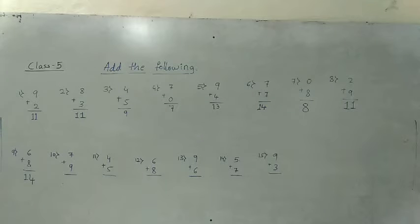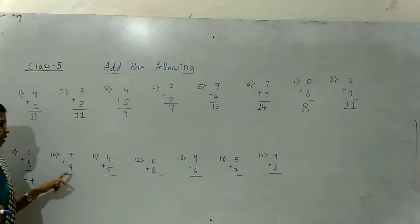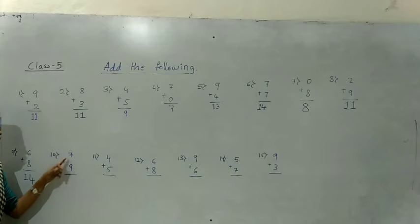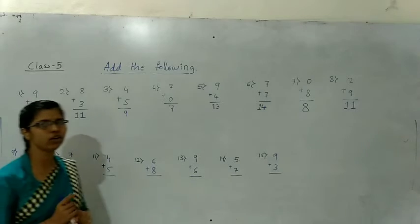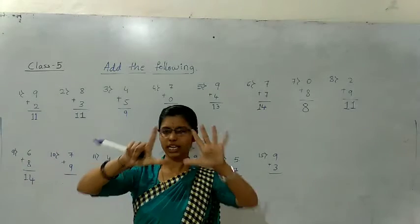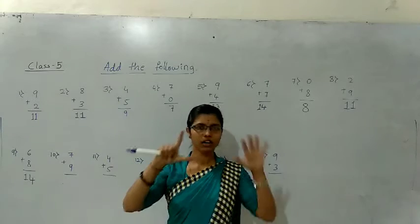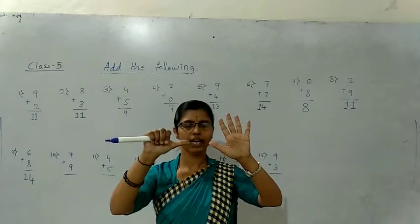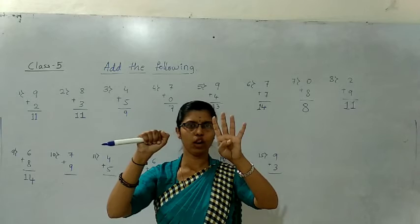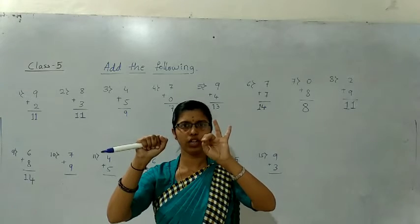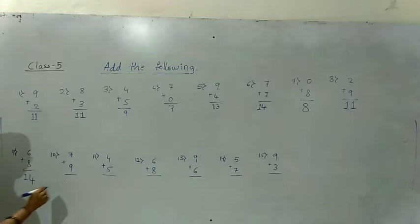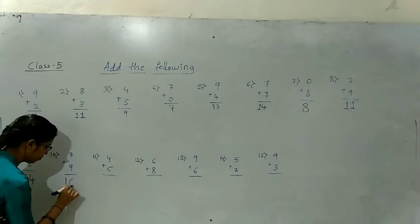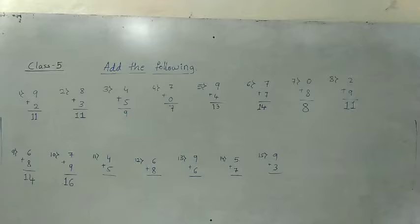Next one — that is question 10: 7 plus 9. We should hold how many fingers? 7 — the upper number is 7. The below number is 9. Count after 9: ten, eleven, twelve, thirteen, fourteen, fifteen, sixteen. The answer is 16.